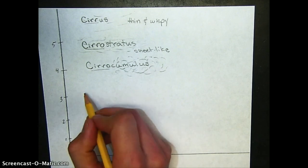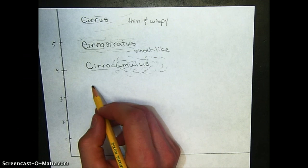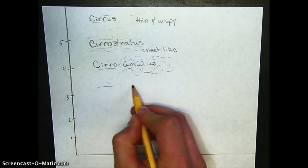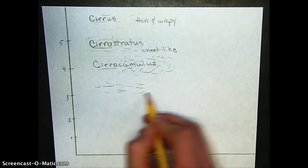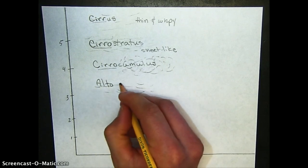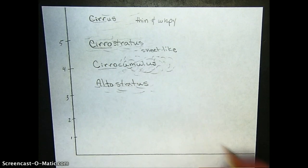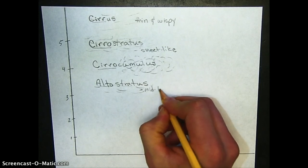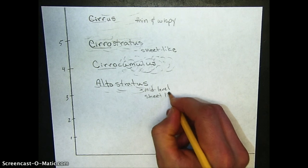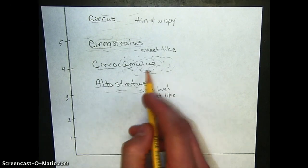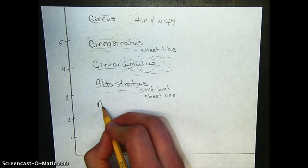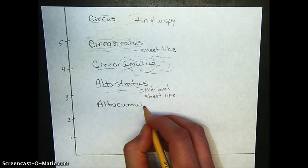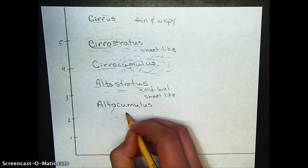The next layer down, these are the middle level clouds. And if you're a singer, you would know that the middle range, the middle register is alto. So lower sheet-like clouds are called altostratus. They're mid-level sheet-like. And we also have puffy clouds at that middle level, so they have the prefix alto. And since they are puffy, they are called cumulus, so they're mid-level puffy clouds.